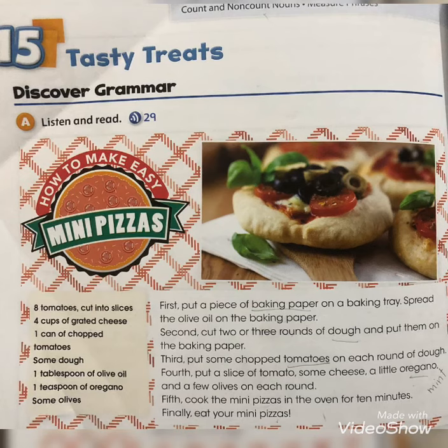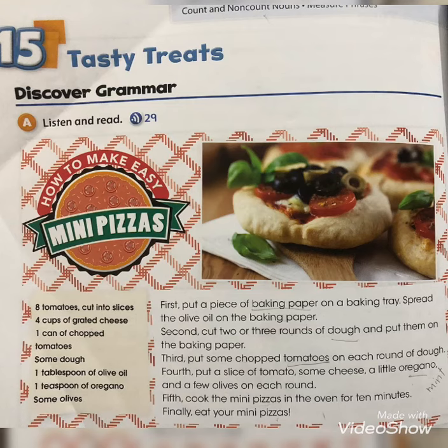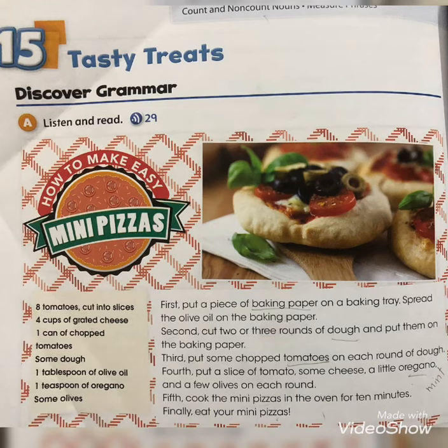We need eight tomatoes and we have to cut them into slices. We need four cups of grated cheese and one can of chopped tomatoes. First, we will cut eight tomatoes into slices, then rub cheese on a grater. We also need some dough, one tablespoon of olive oil, one teaspoon of oregano, and some olives.